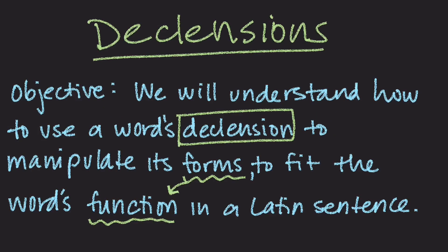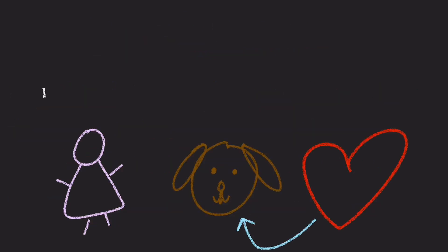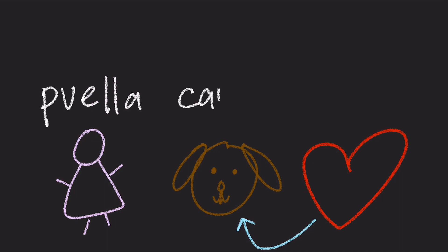This video is about declensions. In particular, we will understand how to use a word's declension to manipulate its forms to fit the word's function in a Latin sentence. Understanding declensions is an important step to reading and writing Latin sentences, but what really is a declension?